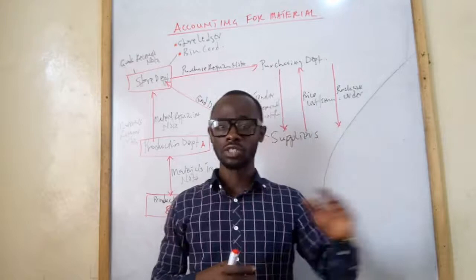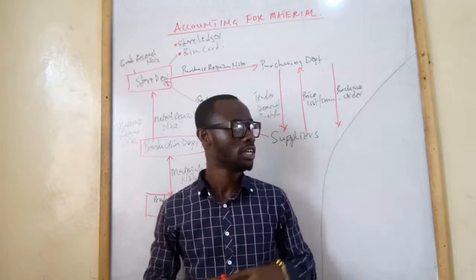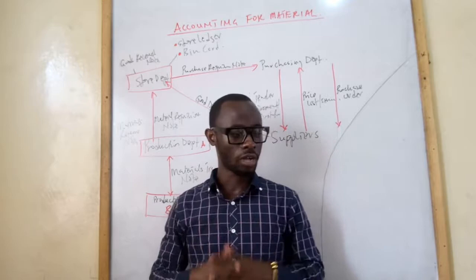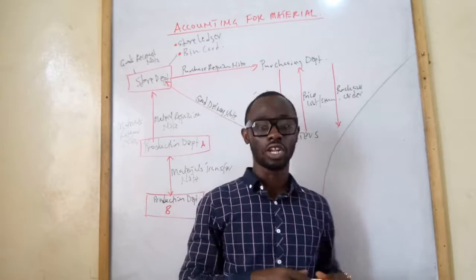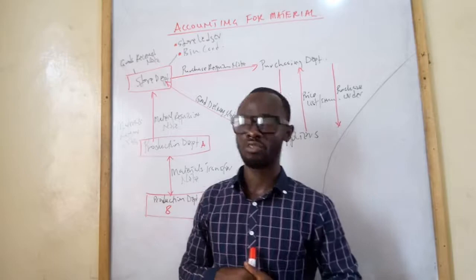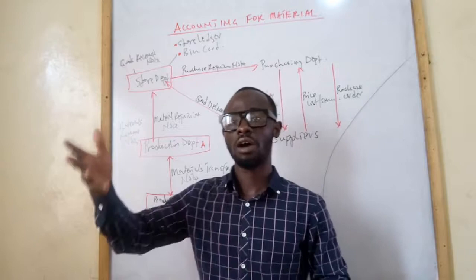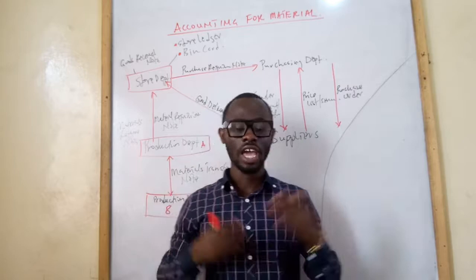Then storage — we must take care of how we store our inventory, because without good storage capacity some inventories will suffer damage or become obsolete. Once inventories are purchased, received, and coded for easy identification, we keep them well in the store. The next step is to issue the inventory from the store. Once issued, there has to be stock taking to determine how much stock is left and how much is outstanding.